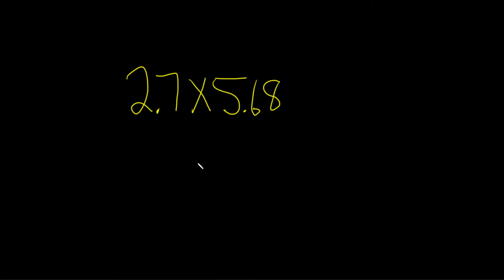Multiply 2.7 times 5.68. The first step when multiplying decimals is to write the number with the most digits up top, so 5.68. Then you want to write the other number below it and line up the numbers. So 2.7.